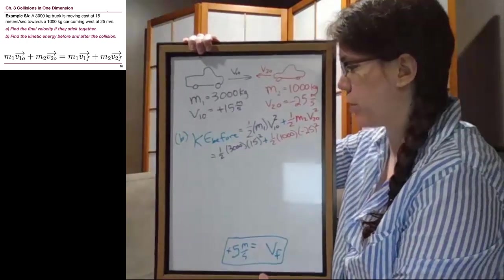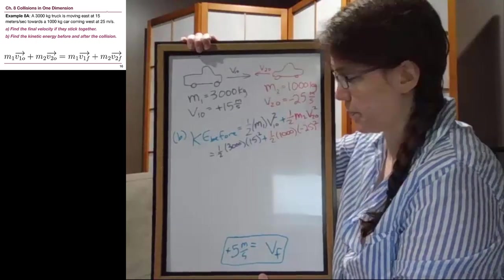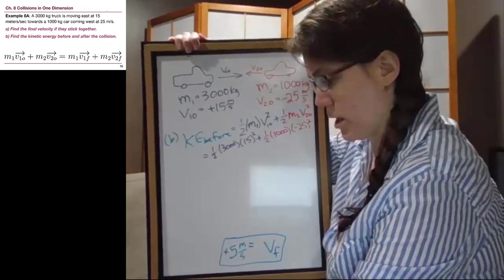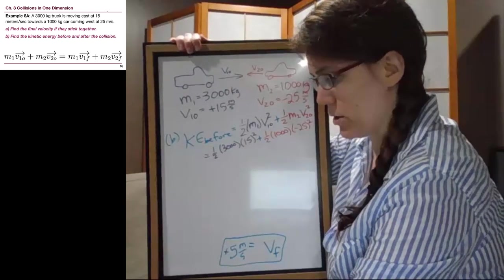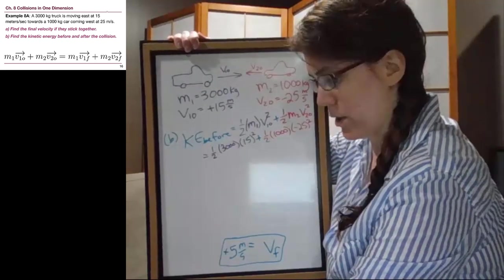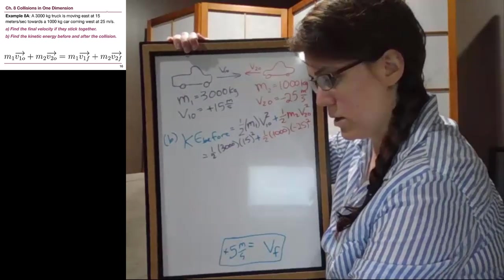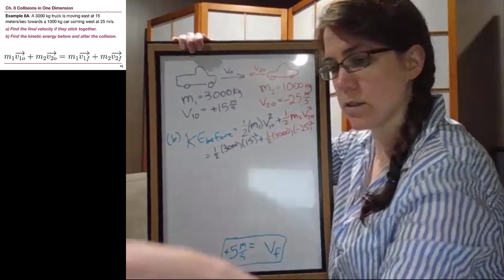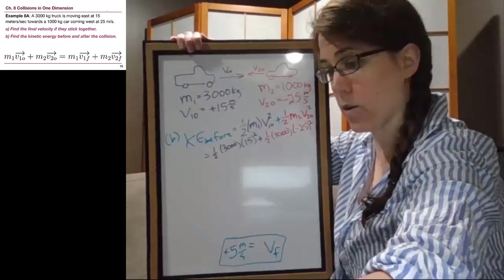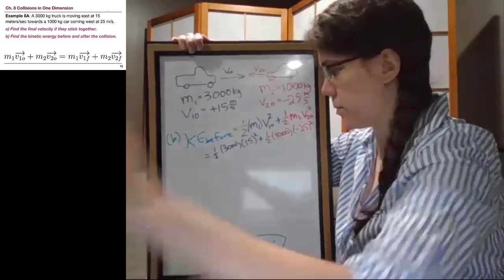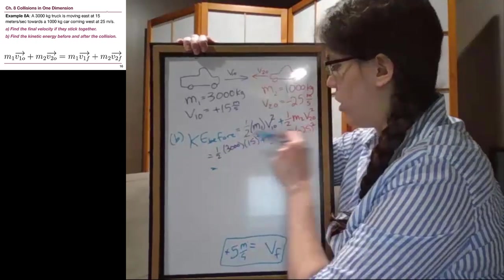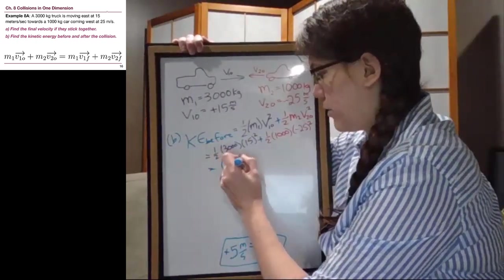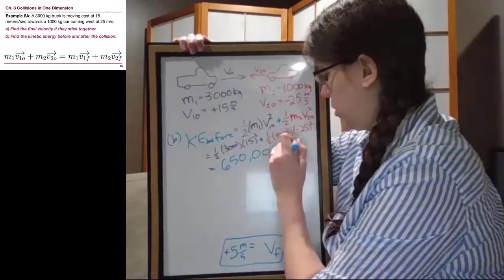Now I'm going to plug all of this into the calculator at once so that we don't have too much board space. So the energy before when we do all of this in our calculator is 650,000 joules.